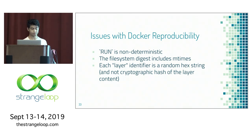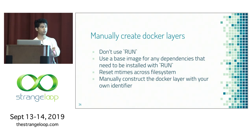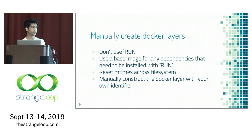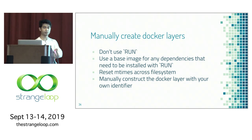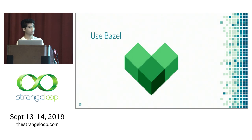To get around this, there are a few things you can do: don't use RUN — instead, build a base image at set intervals or manually for any dependencies that need to be installed. You need to reset mtimes across the filesystem, and manually construct the Docker layer with your own identifier. This is basically just rewriting Docker with some changes. I started going down this route and realized there's something that does all this for you.